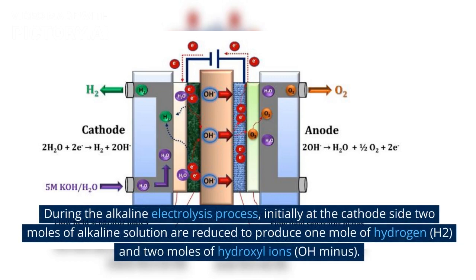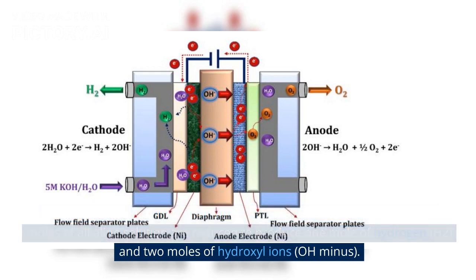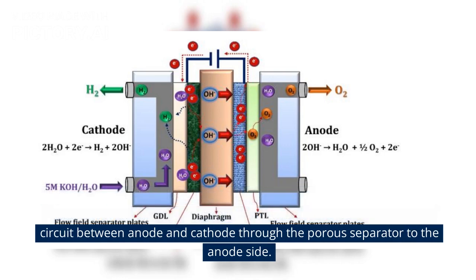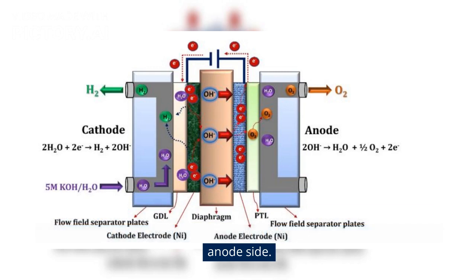During the alkaline electrolysis process, initially at the cathode side, two moles of alkaline solution are reduced to produce one mole of hydrogen (H2) and two moles of hydroxyl ions (OH-). The produced H2 can be eliminated from the cathodic surface and the remaining hydroxyl ions are transferred under the influence of the electric circuit between anode and cathode through the porous separator to the anode side.